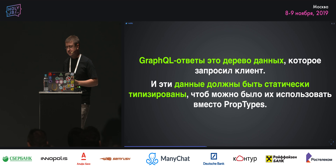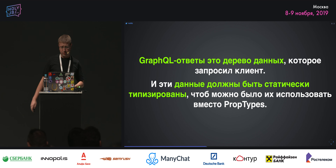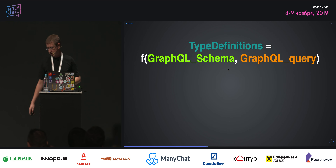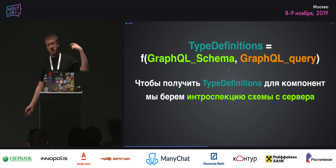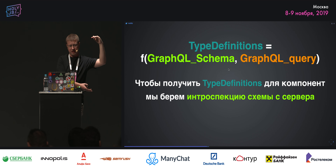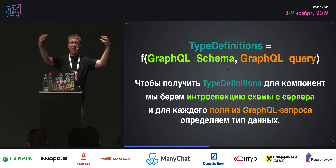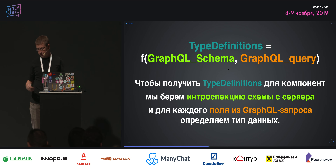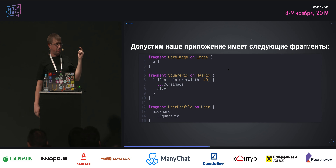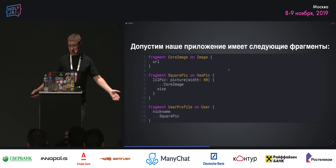GraphQL ответы — это дерево данных, которое должно быть статически типизировано, чтобы использовать вместо prop types. Формула простая: берём интроспекцию серверной схемы — она обычно в SDL, где описаны все поля и типы — и наш GraphQL запрос с клиента. Соединяем их, и некий код-генератор собирает для нас type definitions для Flow или TypeScript. В Apollo это Apollo CLI, в Relay это Relay Compiler.